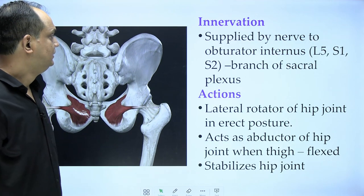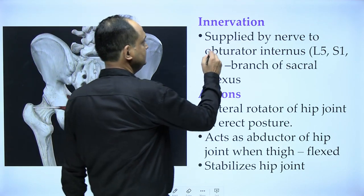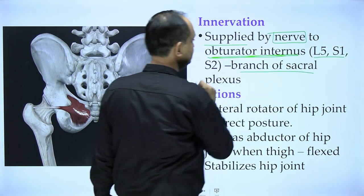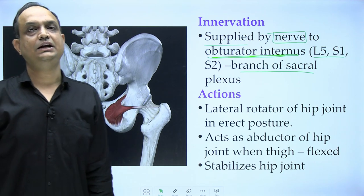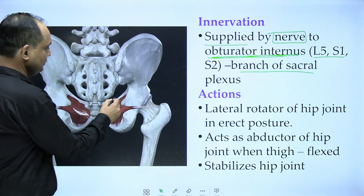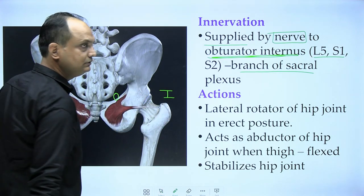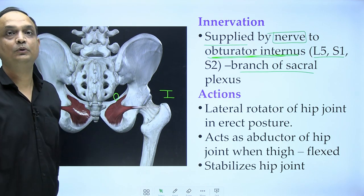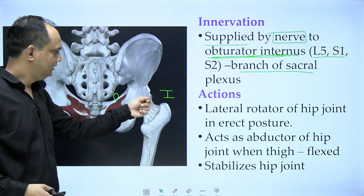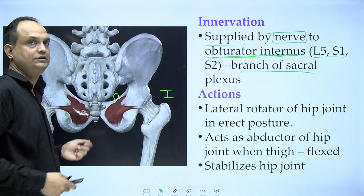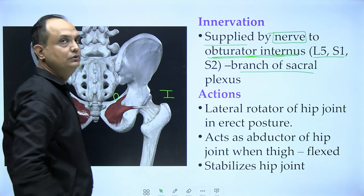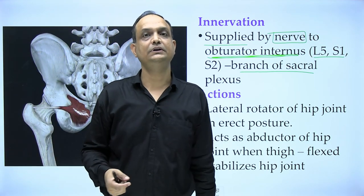The obturator internus is supplied by the nerve to obturator internus, which is a branch of the sacral plexus. Regarding its action: origin is the fixed point and insertion is the mobile point. When the origin is fixed and you pull the insertion, the femur moves outward — this means it shows lateral rotation of the femur at the hip joint.